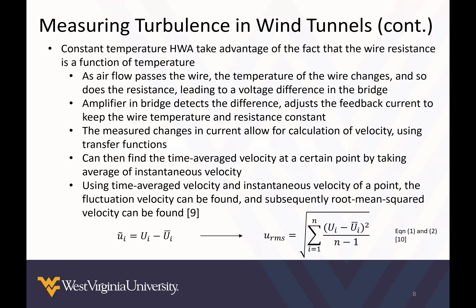For constant temperature hot wire anemometers, they take advantage of the fact that wire resistance is a function of temperature. As air passes the wire in the wind tunnel, the temperature of the wire changes due to convection, leading to a resistance change, which leads to a voltage difference in the bridge. The amplifier in the bridge detects this difference and adjusts the feedback current to keep the wire resistance at a constant.